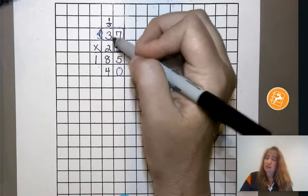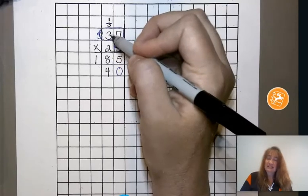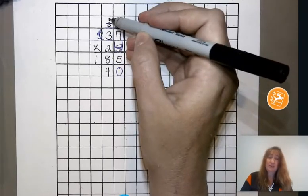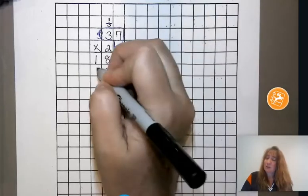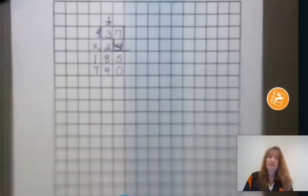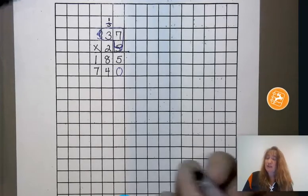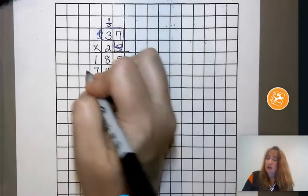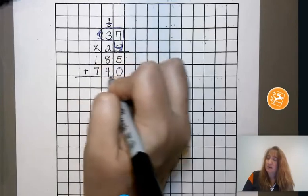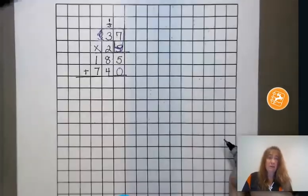So now we have 2 times 3 is 6 plus the 1 we carried would be 7. So we're going to go ahead and put our 7 here. Now after we're done multiplying our numbers together, the last step here is to add up all the numbers that we have below that line.